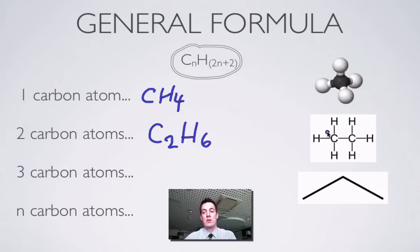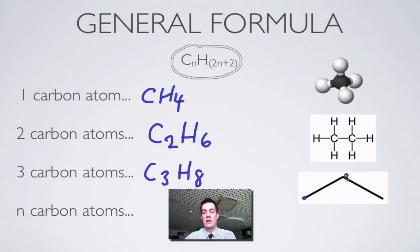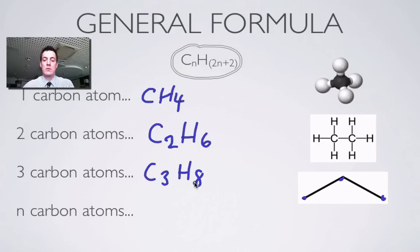There's a slightly different way of representing the molecule: rather than having a 3D image, we draw all the atoms flat on the page with their single bonds. Now if we've got three carbon atoms, we have C₃ and 2×3 + 2 = 8, so C₃H₈. This is a picture of C₃H₈ using a skeletal formula — this assumes that any bonds we can't see are filled with hydrogens and that the ends of lines are carbon atoms. So the general formula is: for N carbon atoms, the number of hydrogens is twice that number plus two.